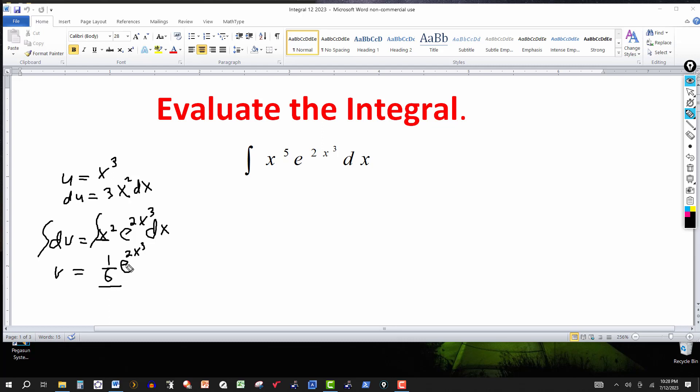Take the derivative of this. The derivative of an exponential times the constant is the exponential and the same constant, times the derivative of the exponent. The derivative of 2x cubed is 6x squared. The 6 and the 1/6 will cancel. It gives me the x squared, so it checks.